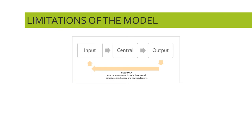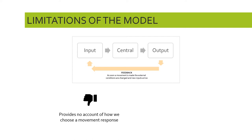Let's pick up on two limitations of this model. The first is a problem with the central stage — it's a bit of a catch-all. It's something of a black box: we have an input, then stuff happens, then there's an output. But what is actually going on there? The model doesn't really provide an account of how we go about choosing that movement response. It just says that we do. What are the steps in that central stage? The model doesn't tell us.